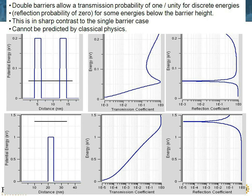Now let's look at this in a double barrier case. The double barrier should be pretty much like the single barrier, right? You put two barriers behind each other and the exponential decay should just add up — like two series resistors. If you put two series resistors behind each other, the resistance doubles. So if you have an exponential decay through one barrier, you should just have more decay going through two barriers, and making a single barrier fatter gives exponential decay.